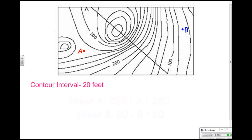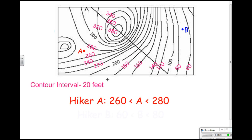Sometimes you will be asked at what elevation certain points are. Using the same map, since I already know the contour interval is 20 feet, I'll label each line with its correct elevation. The line below 100 is 80 feet, and the line above 100 is 120 feet, and I continue labeling all contour lines. Now let's say there is a hiker at point A and I want to know what elevation he is at. He's not exactly on a line — he's in between 260 and 280 — so I could guess he is about halfway, which is about 270. But to write it correctly, we say hiker A is in between 260 and 280.